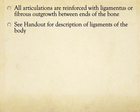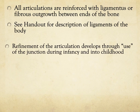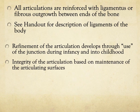All articulations are going to be reinforced by ligamentous structures or fibrous outgrowths that come from the periosteum between the endpoints of two bones. In the handouts, there is a list of the various ligaments you'll be responsible for. The structural integrity of the articulation depends upon its use. We get rearrangement of the articulating surfaces through infancy and into childhood, leading to the development of the formalized articulation. That is then reinforced through use in adulthood, where integrity is based off of maintenance of the articulating surfaces. The more it is abnormally loaded, the less articulating surface will be maintained and the greater the risk for osteoarthritis.